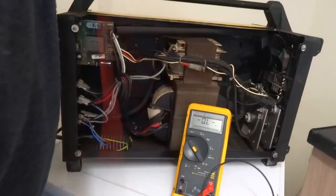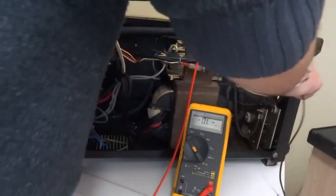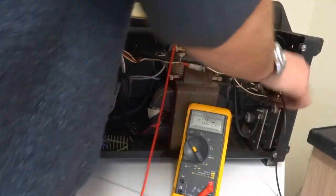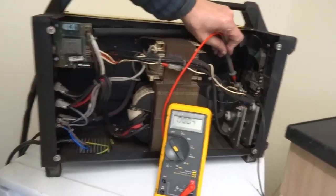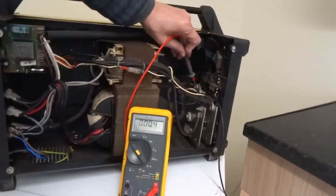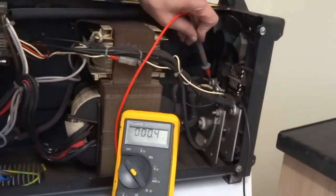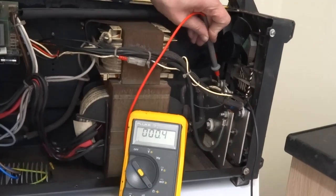Next we'll do the secondary side of the transformer. So there you go, it's a low ohms reading, that's good.